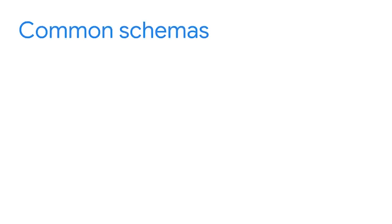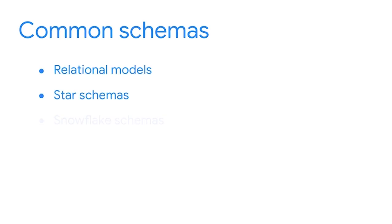Some common schemas you might be familiar with include relational models, star schemas, snowflake schemas, and NoSQL schemas. These different schemas enable us to describe the model being used to organize the data. If the design pattern is the template for the data model, then the schema is the summary of that model. Because BI professionals play such an important role in creating these systems, understanding data modeling is an essential part of the job. Coming up, you're going to learn more about how design patterns and schemas are used in BI, and get a chance to practice data modeling yourself.